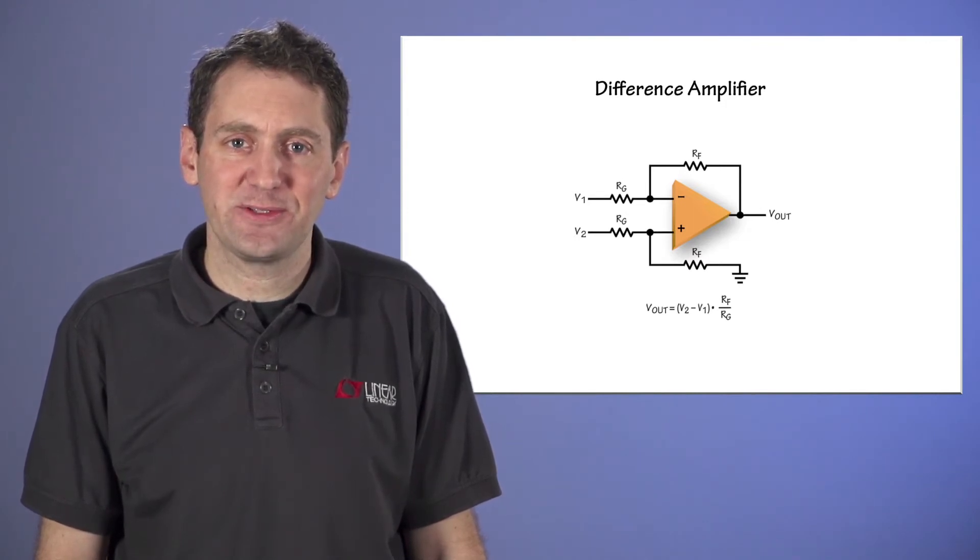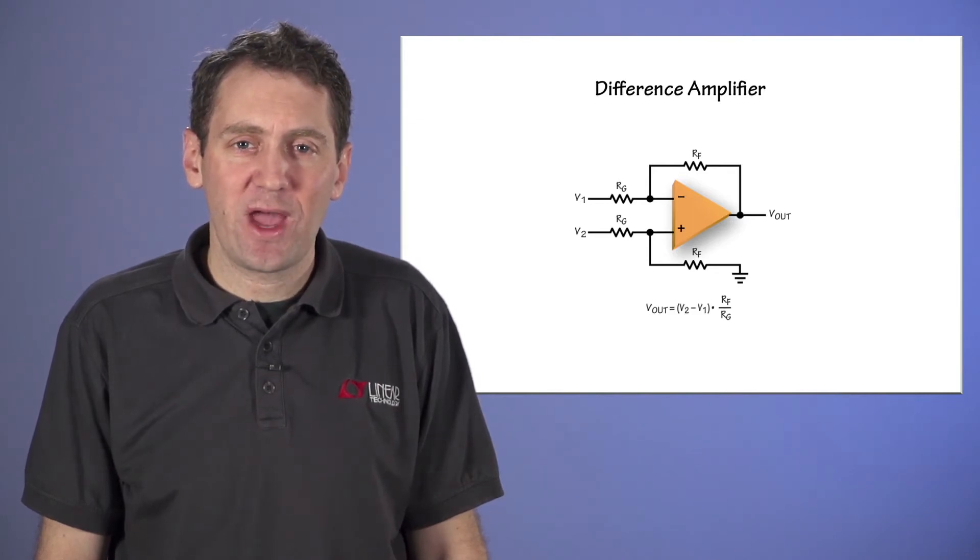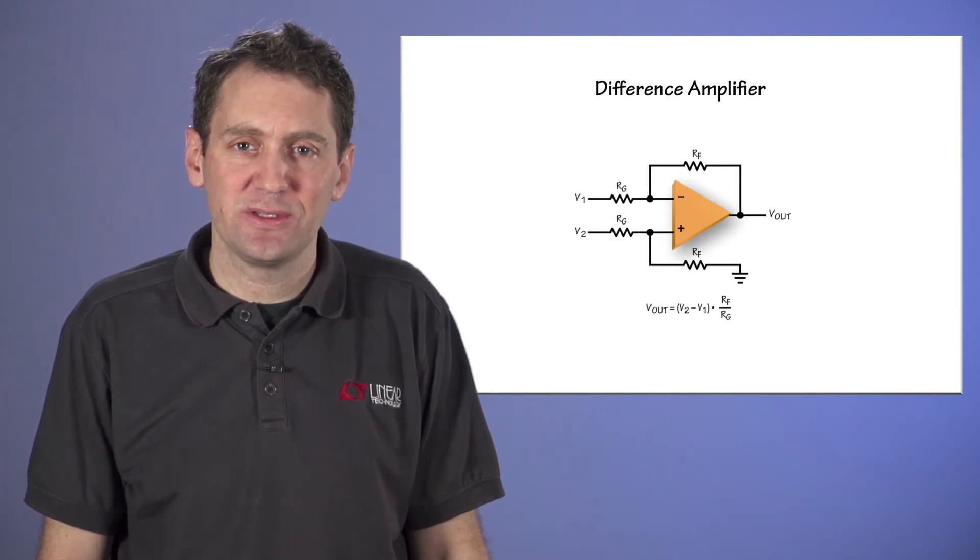Ideally, the difference amp only measures the difference between the input voltages without regards to the common mode or average value of the two inputs. So if the inputs are tied together, the output should be zero even if we move both inputs up and down together.